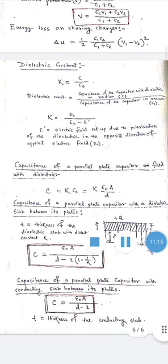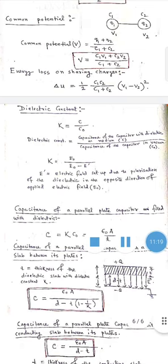For a parallel plate capacitor with a dielectric slab of thickness t inserted between its plates (plate separation d), the capacitance is C = ε₀A / (d − t(1 − 1/K)), where K is the dielectric constant of the slab.